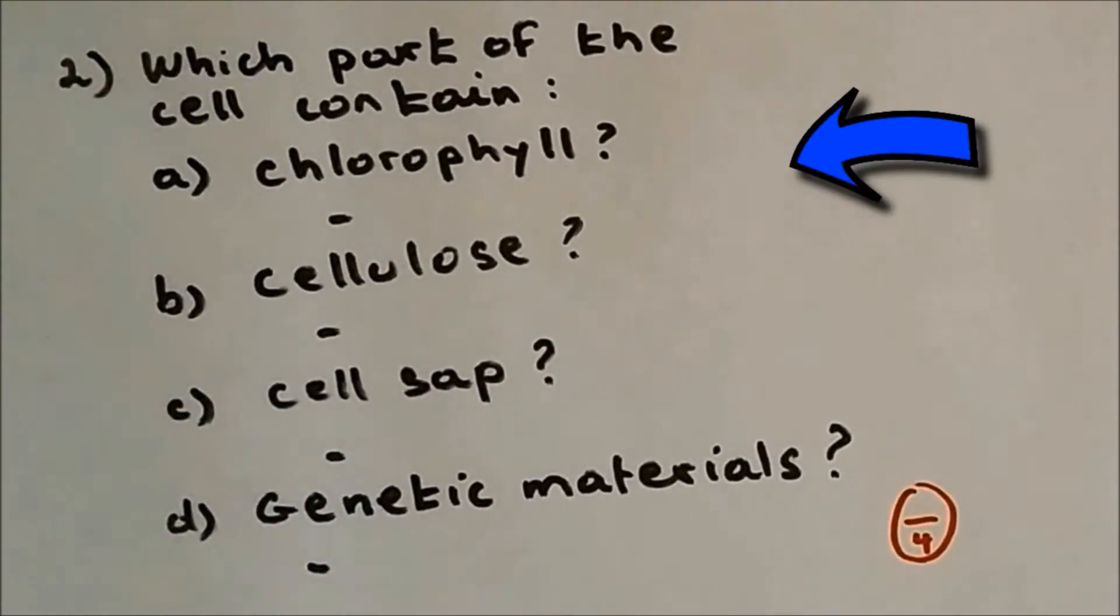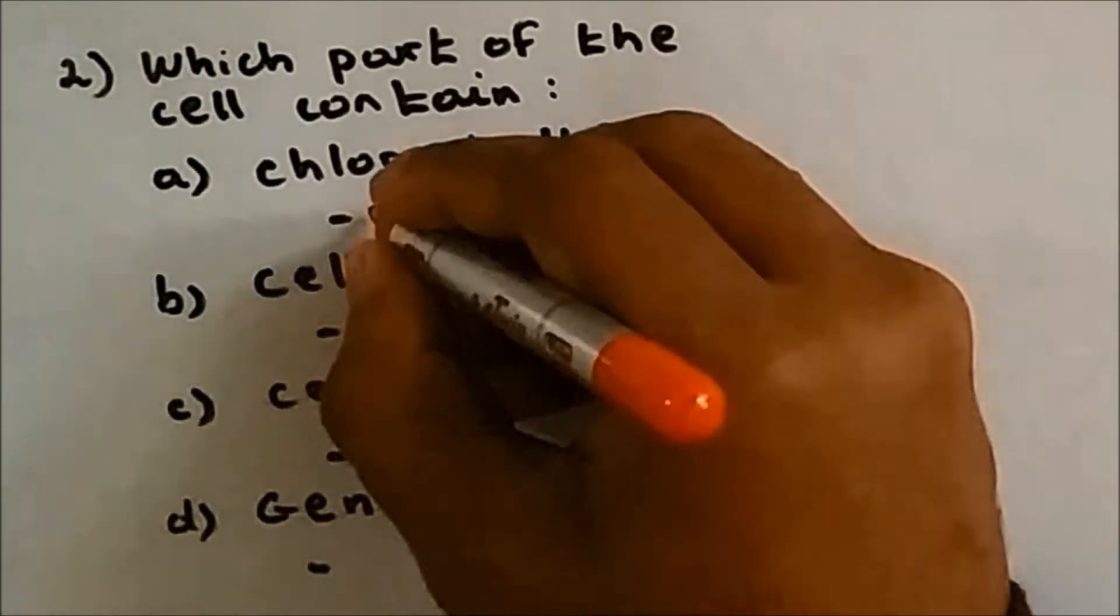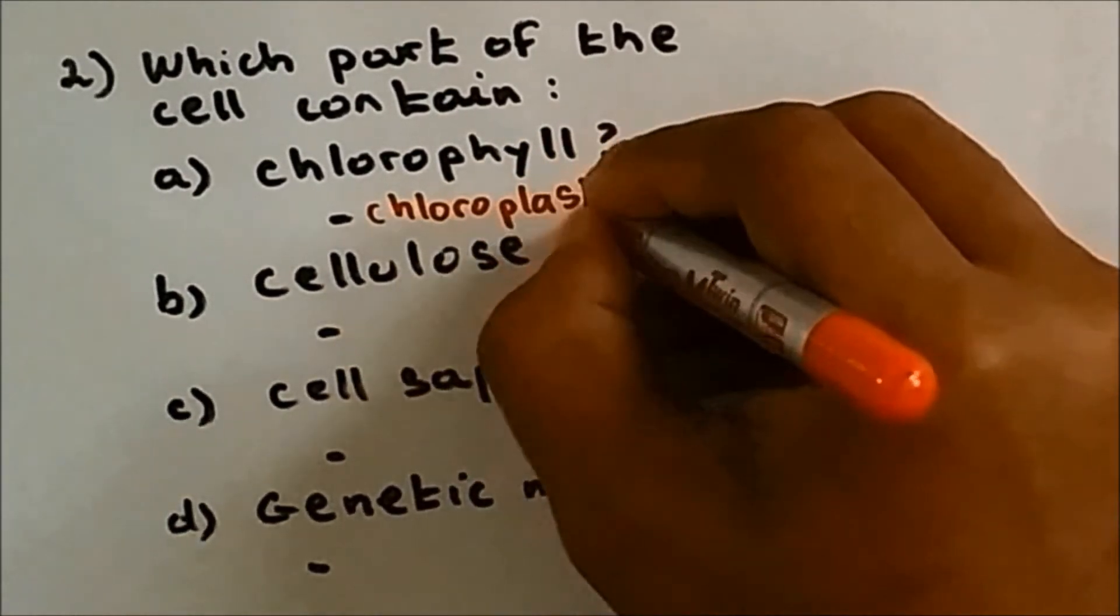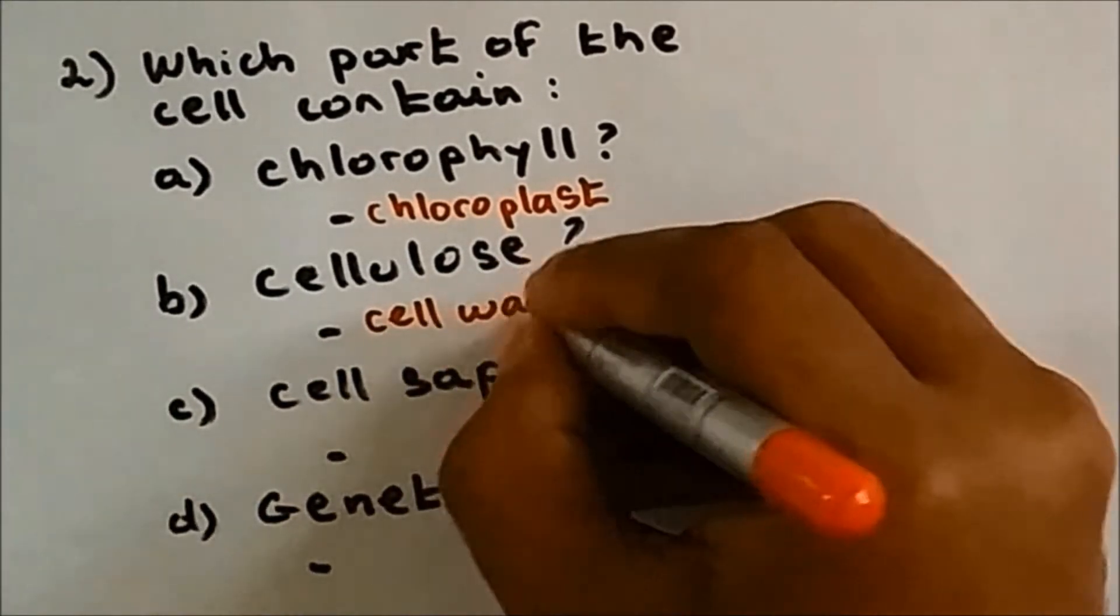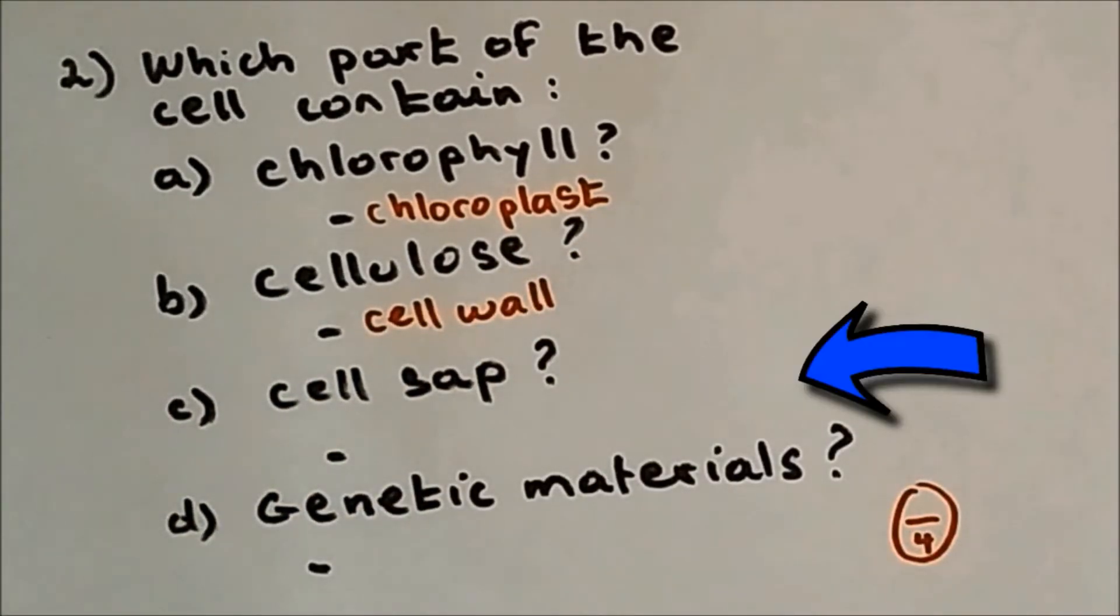Which part of the cell contains chlorophyll? Chlorophyll is found inside chloroplast. The cell wall is made up of cellulose, so inside the cell wall you have lots of cellulose. Cell sap is found inside the vacuole.